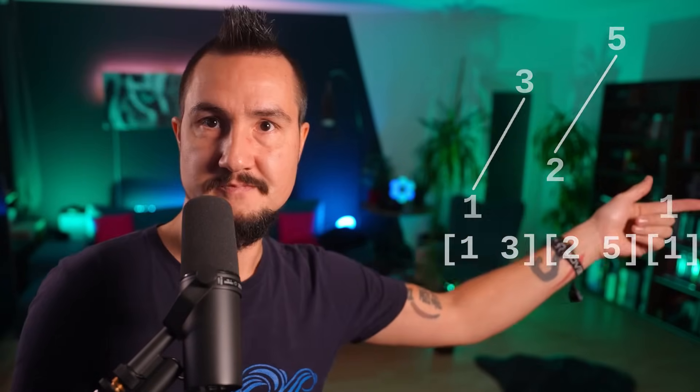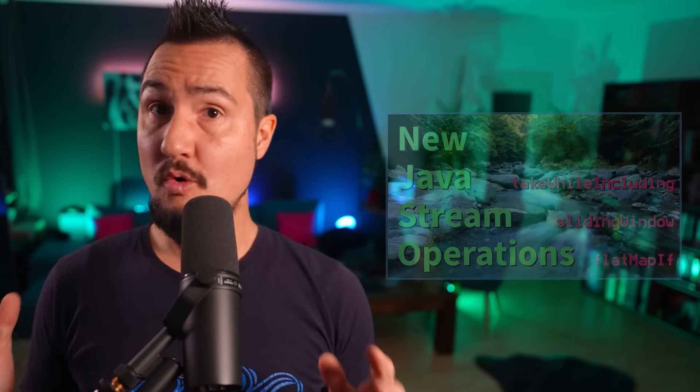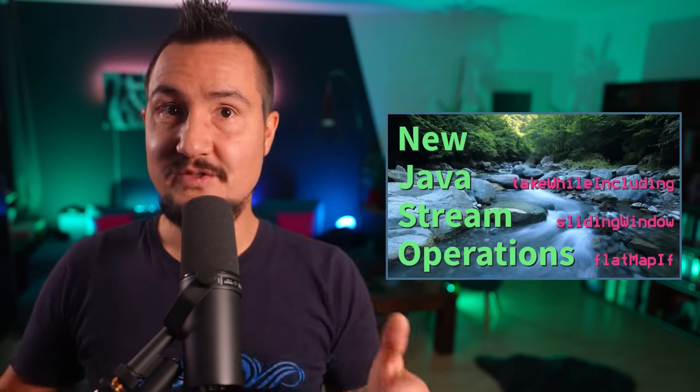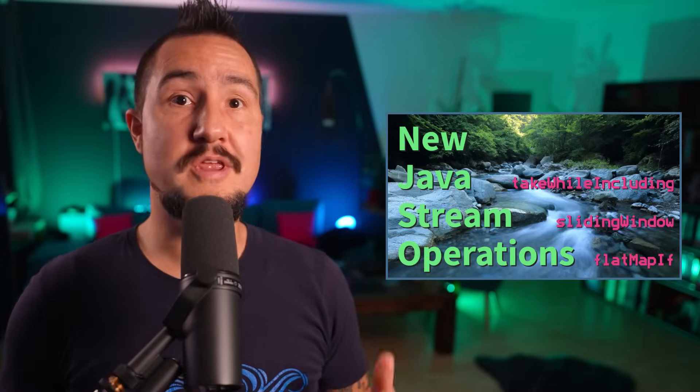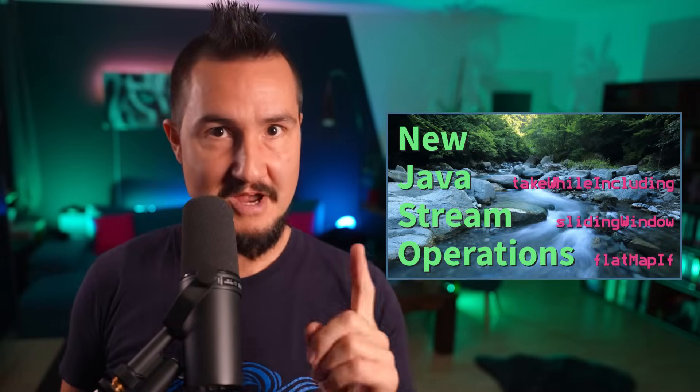A more interesting example would be to turn our increasing subsequence operation into one that emits portions of the original sequence that are increasing — so 1, 3, 2, 5, 1 gets turned into [1, 3], [2, 5], [1]. I'll leave that as an exercise to you. Or, if you're lazy, check out the video I published on my private channel, where I implement all gatherer examples given here and a few more.